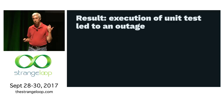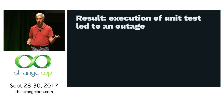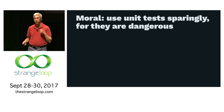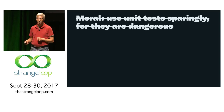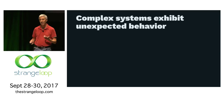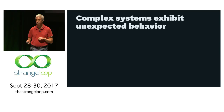To sum this up, this test that was correct, that ran as a unit test, led to an outage at Netflix. The real moral here is that complex systems act in really weird ways. If you were looking at a code review, that code is correct. That test is correct. And yet it still took down production.